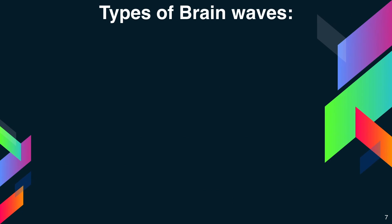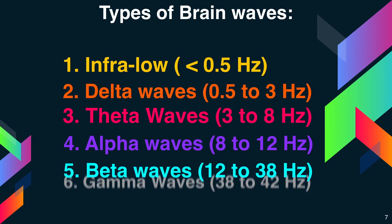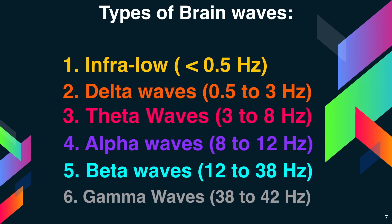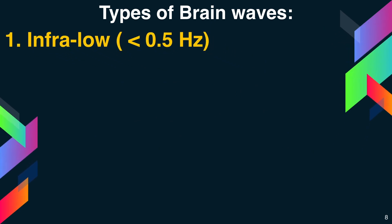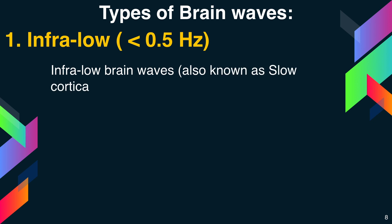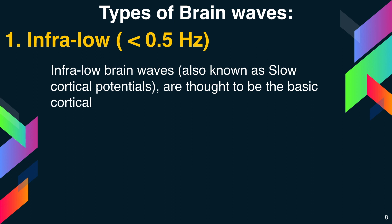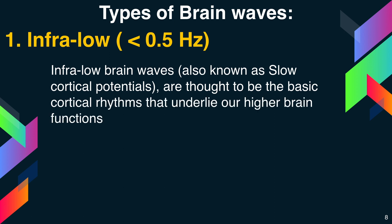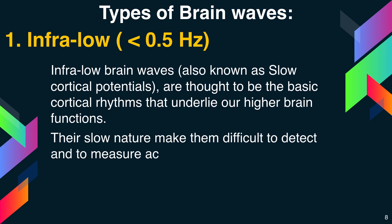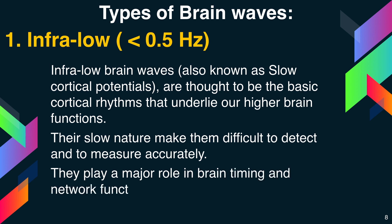Next, types of brain waves. The first type is infra low, at less than 0.5 hertz. Infra low brain waves are also known as slow cortical potentials, and are thought to be the basic cortical rhythms that underlie our higher brain functions. Their slow nature makes them difficult to detect and measure accurately, but they play a major role in brain timing and network function.